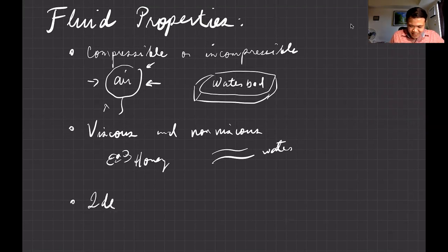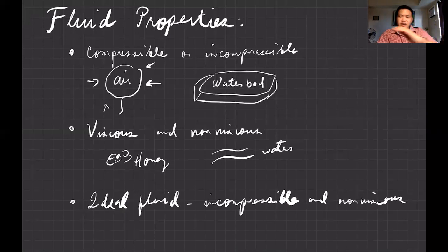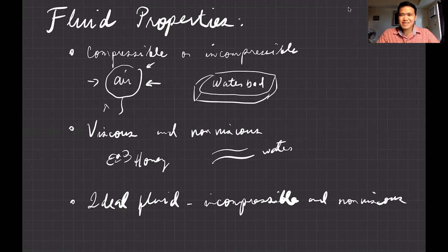An ideal fluid is something that is incompressible — meaning the density doesn't change — and non-viscous, so there's no friction and it just flows freely. You can consider water as nearly incompressible and nearly non-viscous, but that's an assumption. In the next video, I'll discuss the different principles in fluid dynamics. See you then!